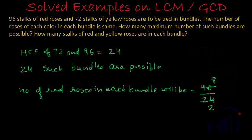8's are 96, 2, 1's are 2, 2, 4's are 8. That means the number of red roses in each bundle is 4.